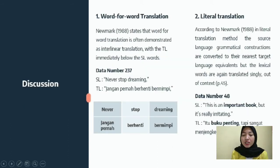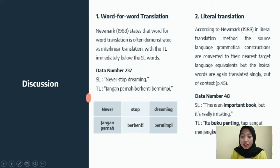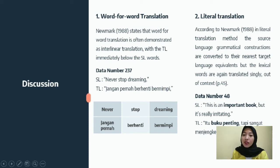The first method is word-for-word translation. Newmark states that word-for-word translation is often demonstrated as interlinear translation with the target language immediately below the source language words. As seen in the example, the source language phrase 'never stop dreaming' is translated into 'jangan pernah berhenti bermimpi' — 'never' becomes 'jangan pernah,' 'stop' becomes 'berhenti,' and 'dreaming' becomes 'bermimpi.' The structure has not changed, which is why it is called word-for-word translation.